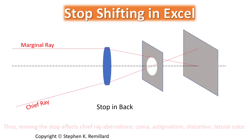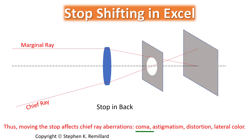The aberrations which are affected by the movement of an aperture stop are the chief ray aberrations: coma, astigmatism, distortion, and lateral color. You won't affect spherical aberration, you won't affect Petzval curvature, and you won't affect axial color by moving the stop.